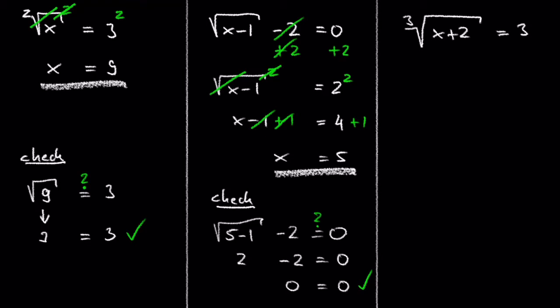Let's look at the next example: the third root of x plus 2 equals 3. In this example, we don't need to isolate the radical because it's already by itself on the left side. So we can move on to the second step, which is to cube both sides of the equation. By cubing the third root, the third root and the cubing cancel each other out. On the left side we get x plus 2, and on the right side we get 3 cubed, which is 27.